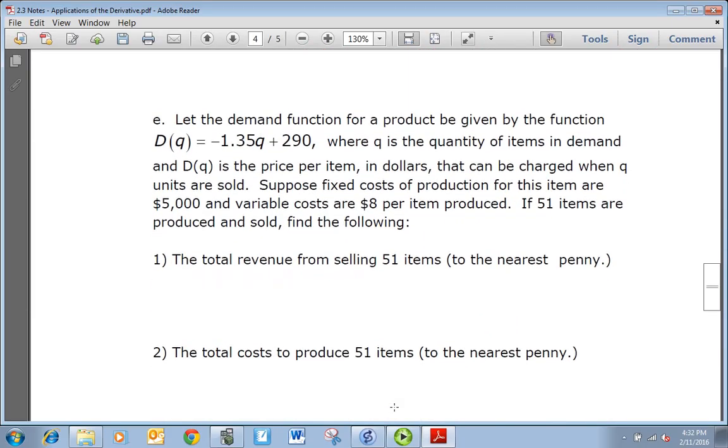Part e: Let the demand function for a product be given by the function D(q) = -1.35q + 290, where q is the quantity of items in demand and D(q) is the price per item in dollars that can be charged when q units are sold. Suppose fixed costs of production for this item are $5,000 and variable costs are $8 per item produced. If 51 items are produced and sold, find the following. We want the total revenue from selling 51 items to the nearest penny.